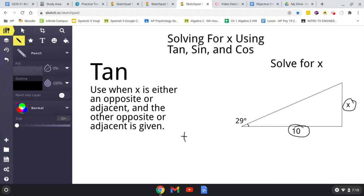So, now we're going to set it up as a proportion. Tan of 29 over 1 equals... Now, tan is opposite over adjacent. So, our x is our opposite and our adjacent is 10. So, x over 10. And solve the same way.